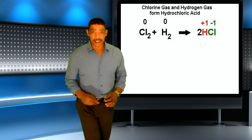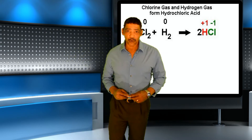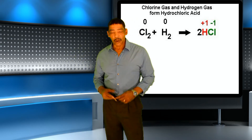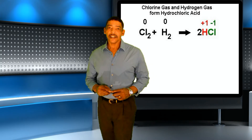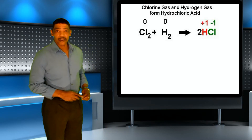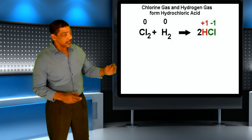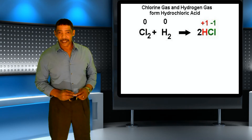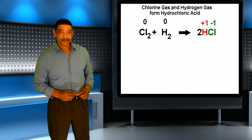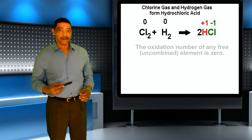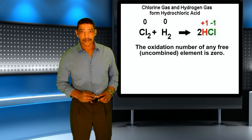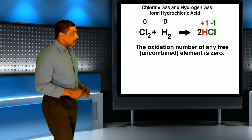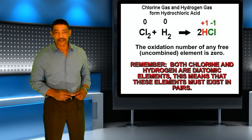A reaction in which a compound is being formed from its elements will always represent an oxidation-reduction reaction. Consider the reaction where chlorine gas and hydrogen gas react to form the compound hydrogen chloride. The oxidation number of any lone element will always be zero, so chlorine gas and hydrogen gas will both possess an oxidation state of zero.